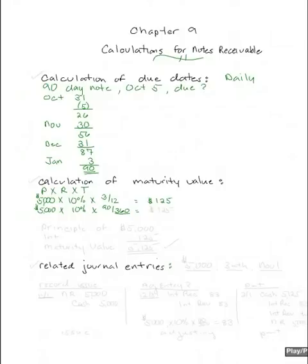If you do it daily, that's my corgi. Hold on. If children are playing, she's going to sing out. 5,000 times 10% times 90 days over 360 also equals $125. So the maturity value of this note is the principal of $5,000 plus interest of $125.